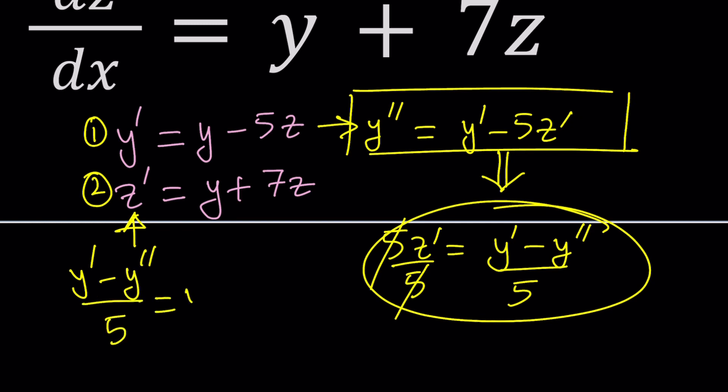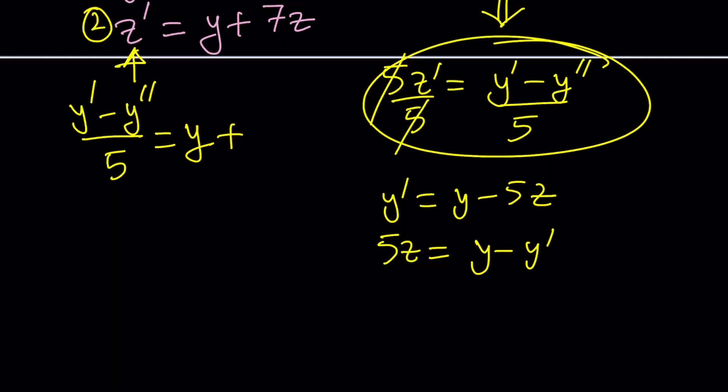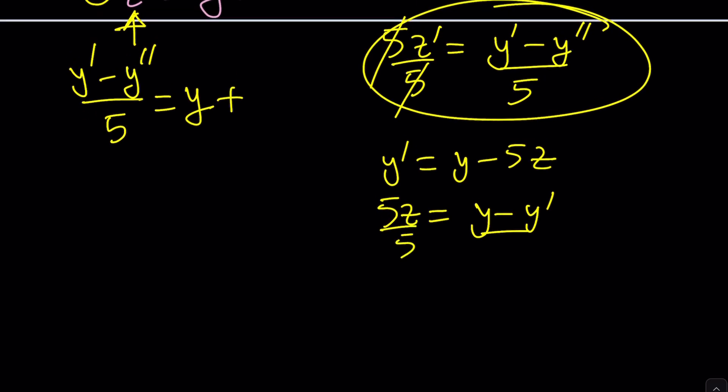What about y? I'm just going to leave it alone. Plus 7z. What can I replace z with? Good question. And we can do that from the first equation. Since y prime is y minus 5z from the first equation, we can go ahead and bring the 5z here and that would become y minus y prime. And then, again, we can divide both sides by 5 and that would give us the value of z in terms of y and y prime.